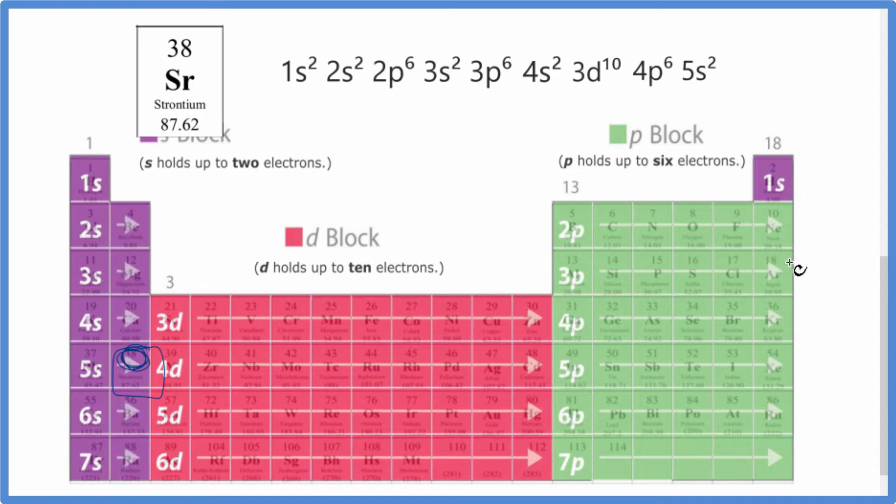3s2, 3p6. Then after 3p, we go to the 4s2. Then we get to the 3d10, 10 blocks across here, it's full. 4p6, and we end up with our 38th electron right here on our strontium, and that's our 5s2.